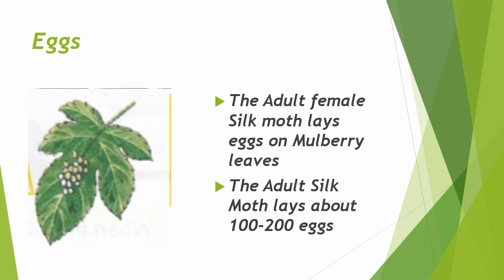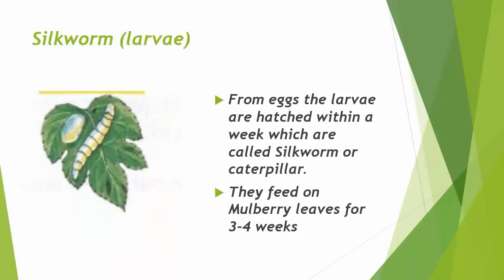First is the Egg stage. The adult female Silk Moth lays eggs on mulberry leaves. The adult Silk Moth lays about 100 to 200 eggs. The larvae hatch in a week, which are called silk worms or caterpillars. They feed on mulberry leaves for three to four weeks.